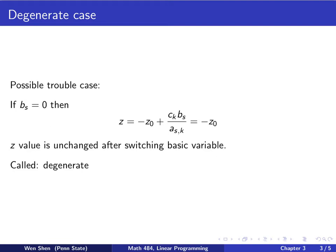Let's take a look at one case, a potential problem we call the degenerate case. Let's say for some index s, the b here is actually 0, and this is the one that you pick up for the ratio because the b over a will be 0, that will be the ratio you will pick up. If you switch the basic variables, what will happen to the objective function? The value will be negative z_0 plus this term, which now is 0 because this term is 0. So it's still negative z_0. The z value remains unchanged after switching basic variable. This is called the degenerate case.